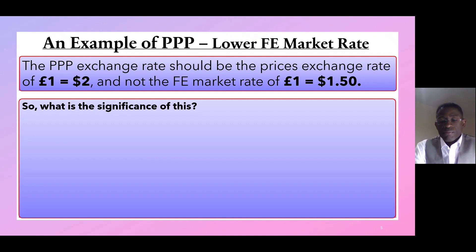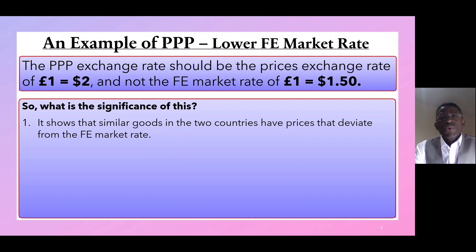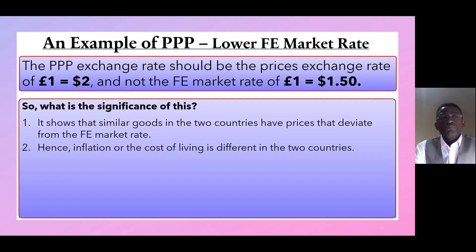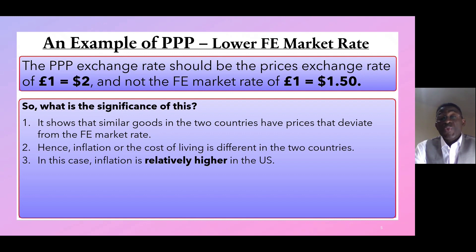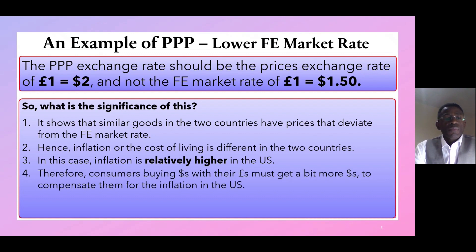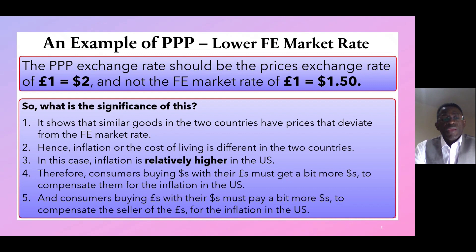What is the significance of this? Number one, it shows that similar goods in the two countries have prices that deviate from the foreign exchange market rate. Number two, inflation or the cost of living is different in the two countries. Number three, in this case inflation is relatively higher in the US. Number four, consumers buying dollars with their pounds must get a bit more dollars to compensate for the inflation in the US. Number five, consumers buying pounds with their dollars must pay a bit more dollars to compensate the seller of the pounds for the inflation in the US.